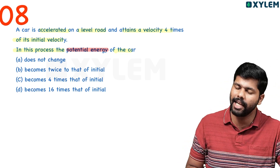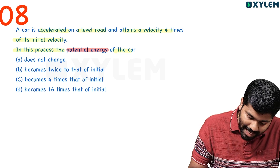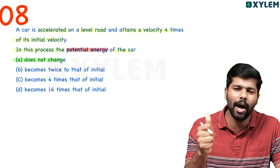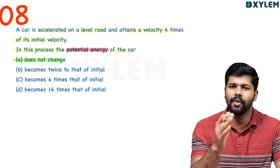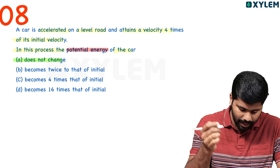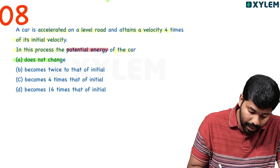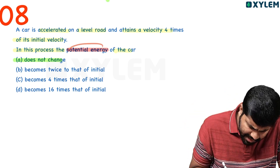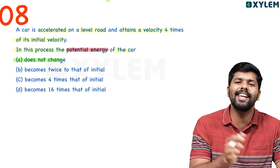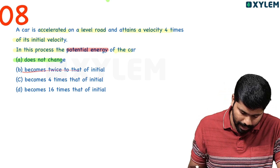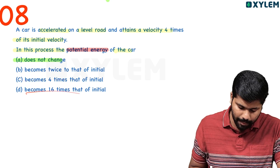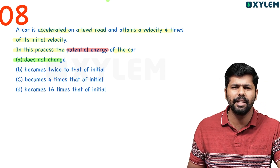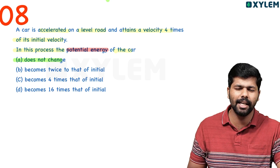The potential energy does not change on a level road. So the answer to the 8th question: if you have a car with kinetic energy, when velocity becomes 4 times, kinetic energy becomes 16 times. But potential energy does not change — it will not change on a level road.